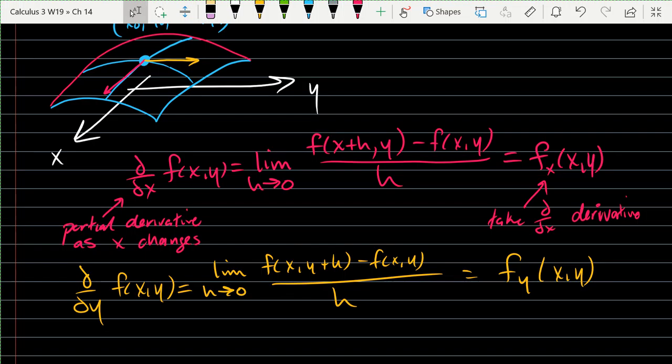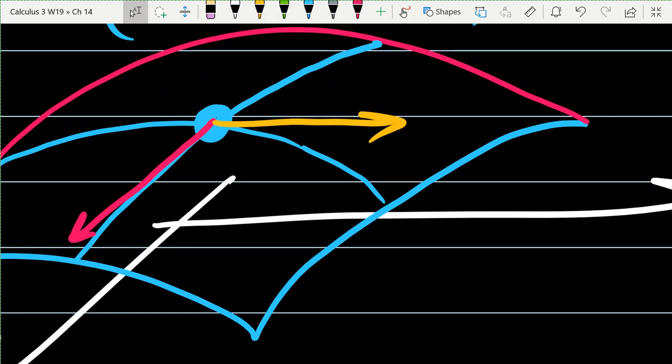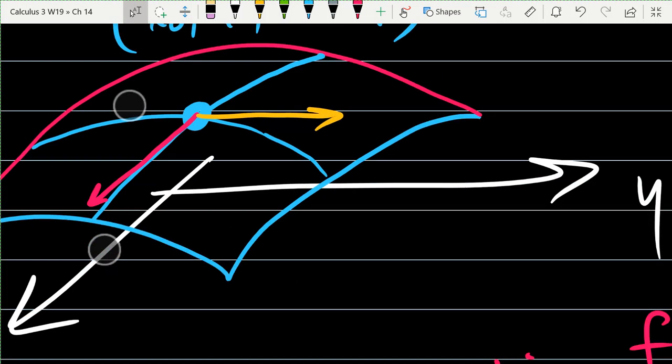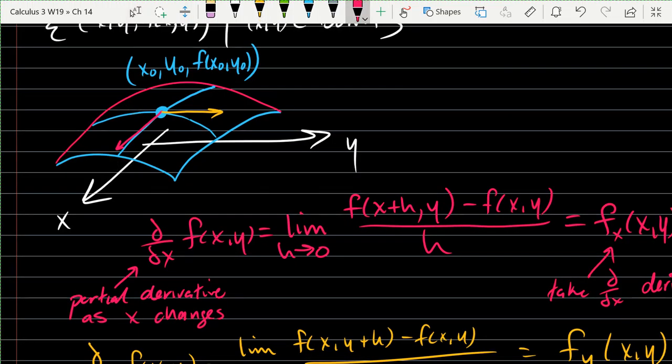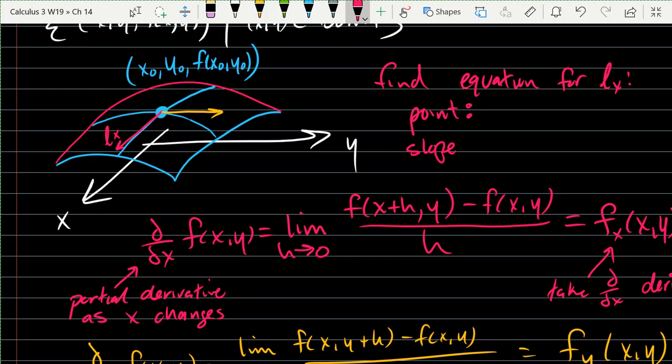So let's find the equations for these lines that I drew on the board. So the point we're going to go through is pretty easy to find. Let's call this L_x for the line in the X direction. Alright, easier to compute the point. What point are we going through? The only point that's on the board: x-naught, y-naught, f of x-naught, y-naught. So that's the point we're going through.